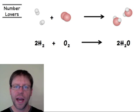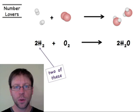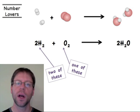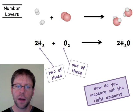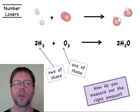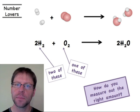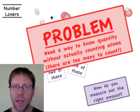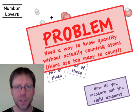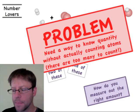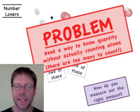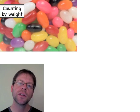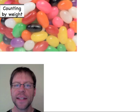Let's take a simple reaction to begin with: two hydrogen molecules reacting with one oxygen molecule to produce two water molecules. I need two of these for every one of these to produce two of these. The fundamental problem is: how do I know how many atoms or molecules I'm dealing with? If I'm doing this in a lab, I certainly can't go around with tweezers grabbing different atoms and counting them one by one — that's just not going to work.